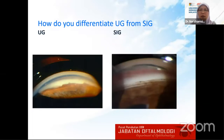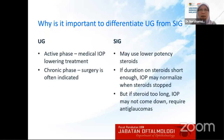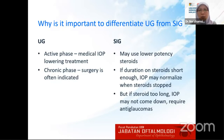Gonioscopy is very important to differentiate between the two. In uveitic glaucoma, classically you can see peripheral anterior synechiae, and you don't see this in steroid-induced glaucoma. However, they can occur concurrently and it's very important to differentiate the two. In uveitic glaucoma, normally in the active phase, you can treat the uveitis and the IOP can come down on its own, but in the chronic phase, surgery is normally indicated.